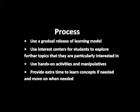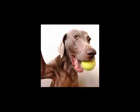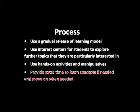Process looks at how activities are used to learn content. Teachers should always make sure activities meet up with objectives. Some examples of differentiating process: use a gradual release of learning model, use interest centers for students to explore topics they are particularly interested in, use hands-on activities and manipulatives. Provide extra time to learn concepts if needed, and move on when needed — students get bored when they've mastered a concept, but frustrated when they don't have enough time to learn another.